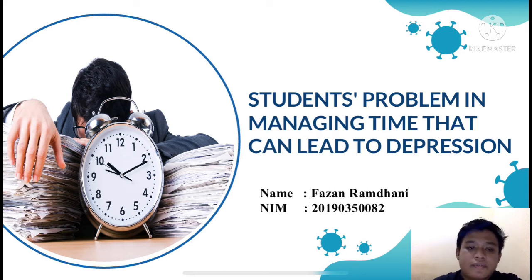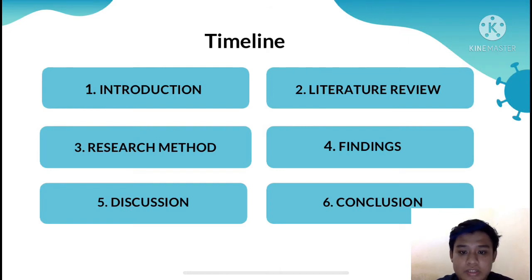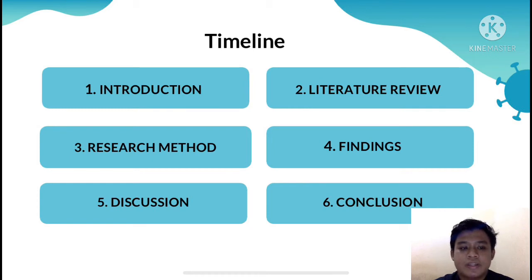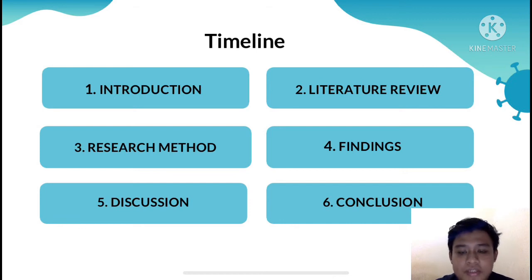The first slide is about timeline. The timeline includes six materials. The first is introduction. Second is literature review. Third is research method. The fourth is findings. The fifth is discussion. And the last one is conclusion.